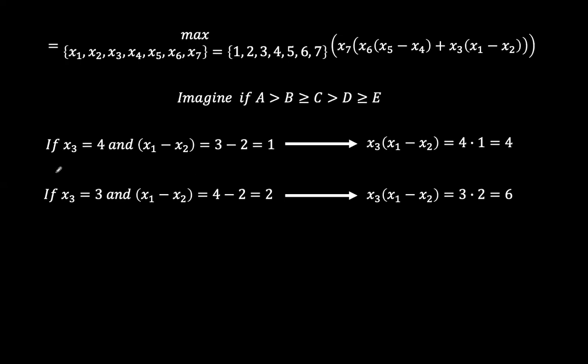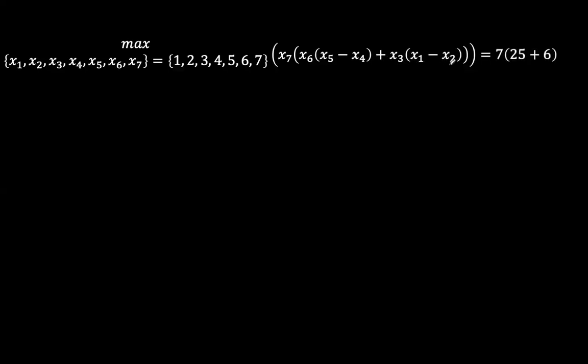And the product of x3 and x1 minus x2 is 3 times 2, which is 6. So since 6 is greater than 4, the second option seems to be of our choice, because we want the maximum possible value of this expression. So essentially what now we have is that the maximum of the integral is x7 times in bracket x6 times x5 minus x4 plus x3 times x1 minus x2 is 7. And since this value amounted to 25 and this value had a maximum of 6, this is the same as 7 times 31, and that is 217. And that is the answer.